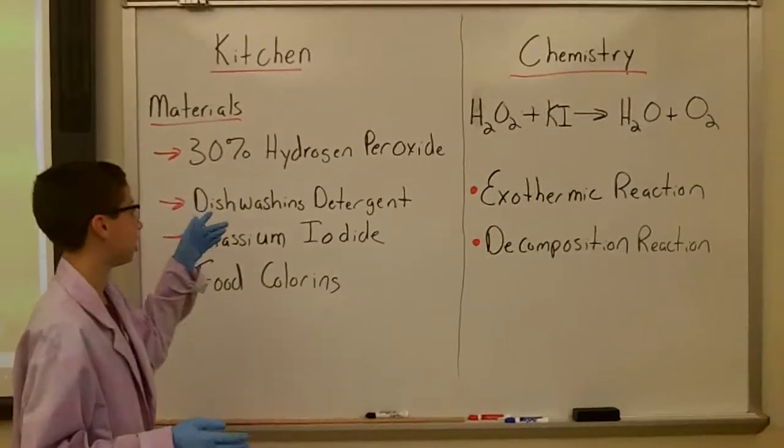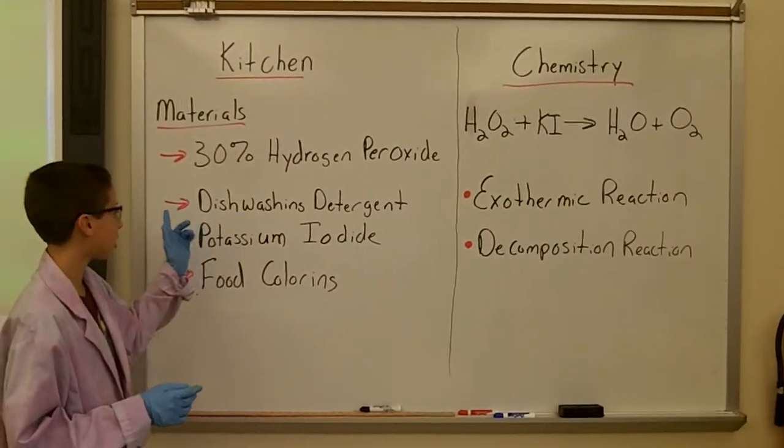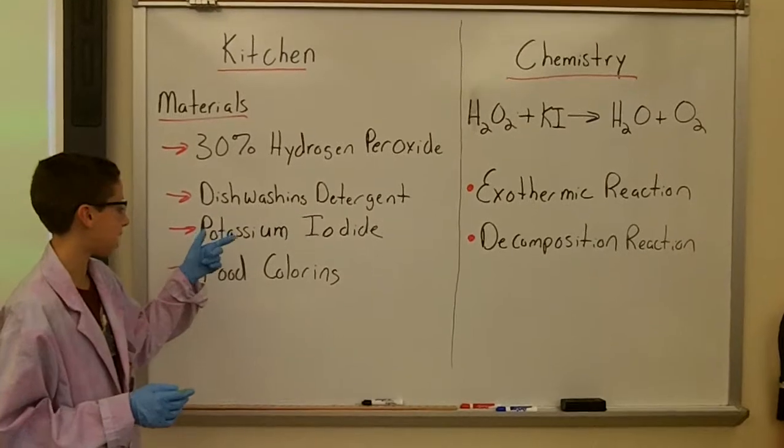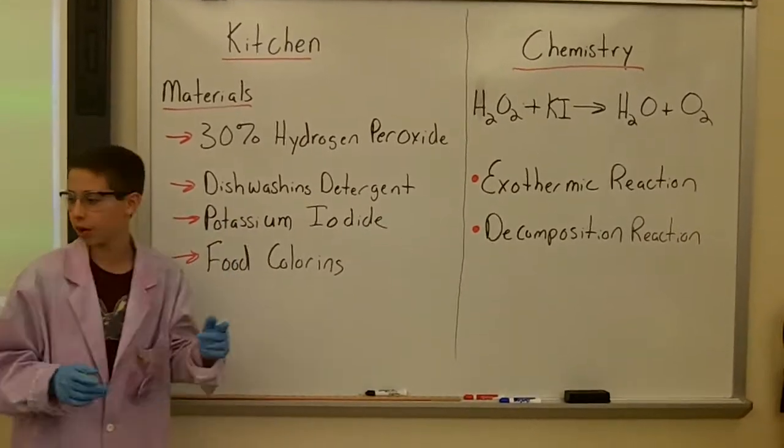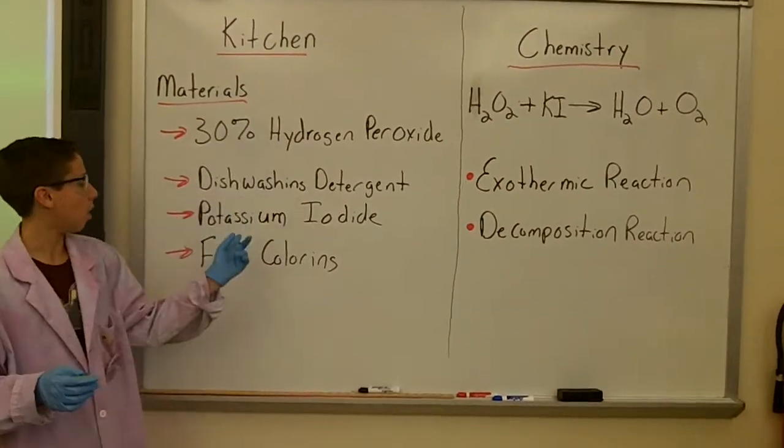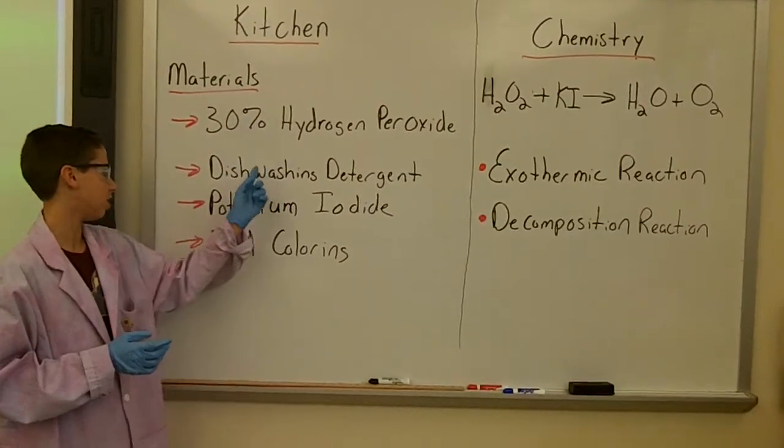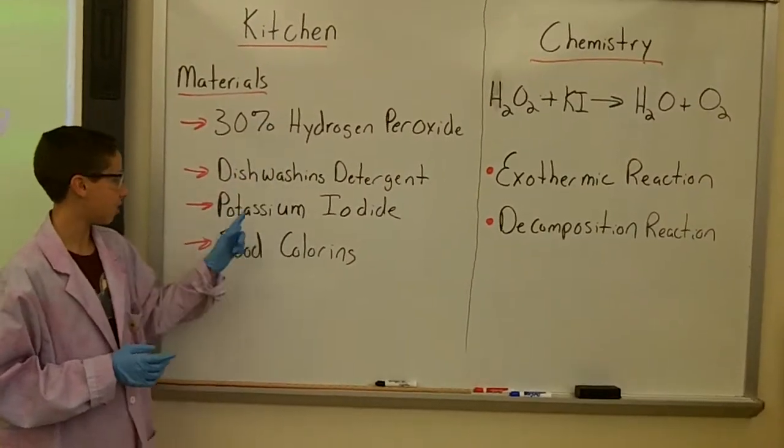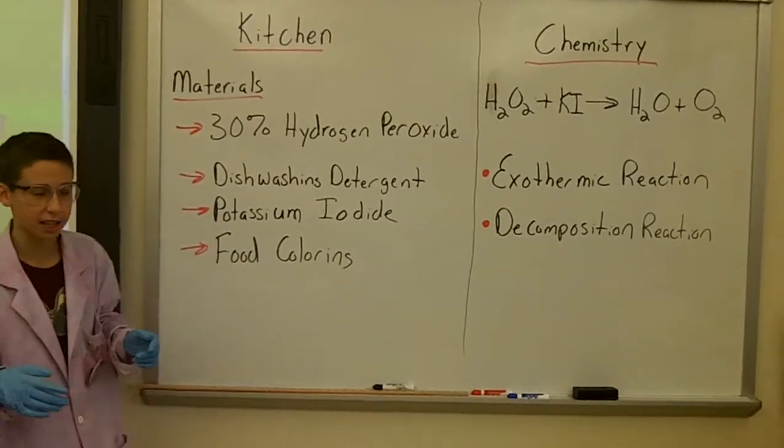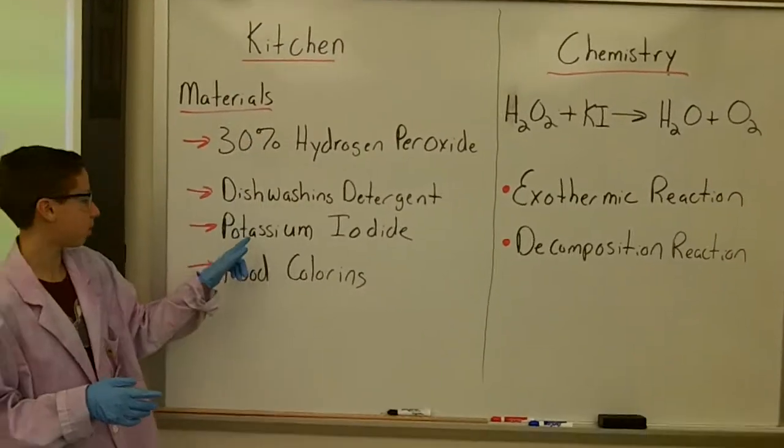We're going to start with our kitchen here. It's just our 30% hydrogen peroxide, the dishwashing detergent, potassium iodine, and some food coloring. You're going to want to combine all of these first, and, well, no. We're going to want to combine these three first, and then this is going to be your catalyst here, and it's going to start the reaction. So these three first, and then put that in.